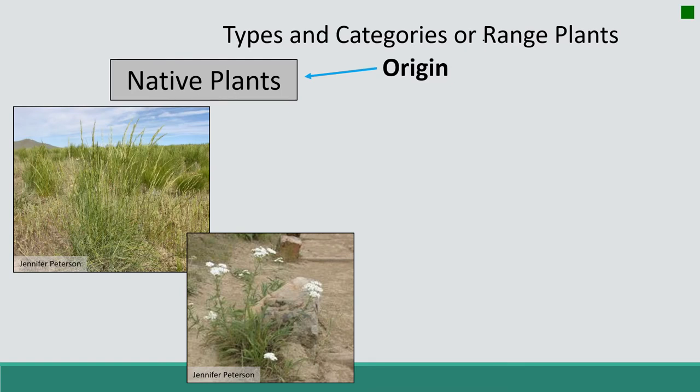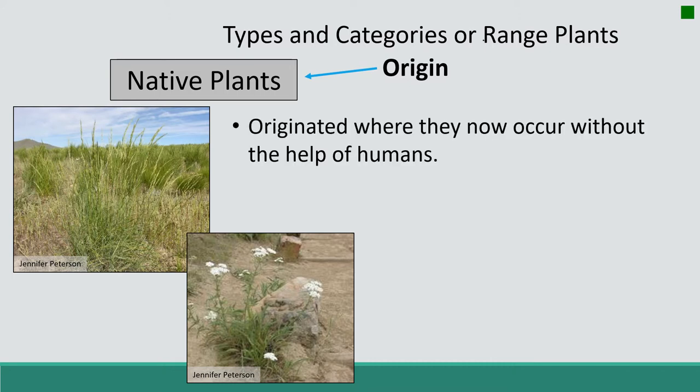All organisms have a home where they've existed and evolved for thousands of years. A native or indigenous species is one that occurs in a plant community without the help of humans. This is not always easy to determine, but one of the factors we often consider is that species native to North America are generally those that occurred prior to European settlement.